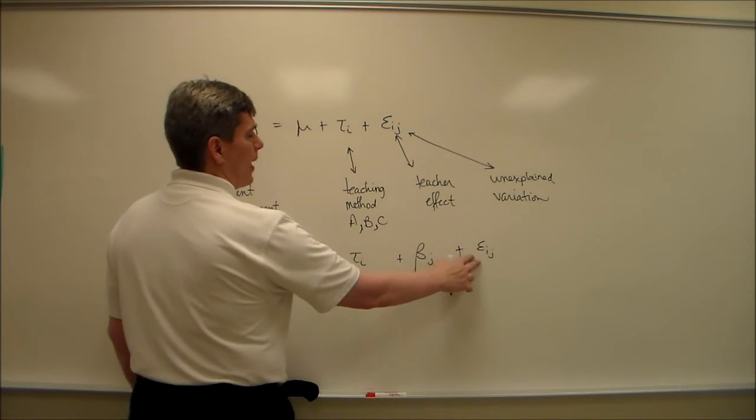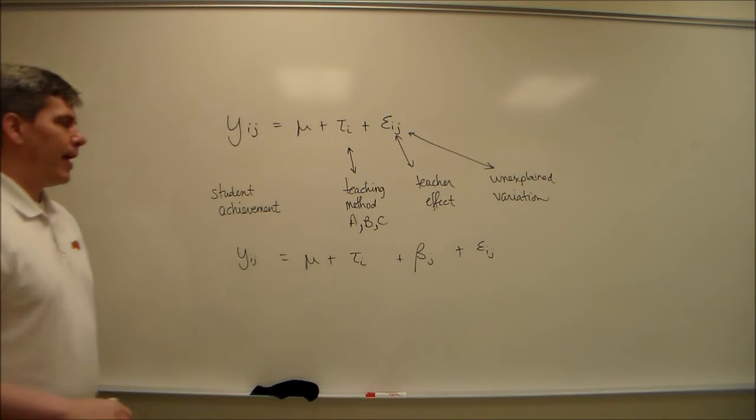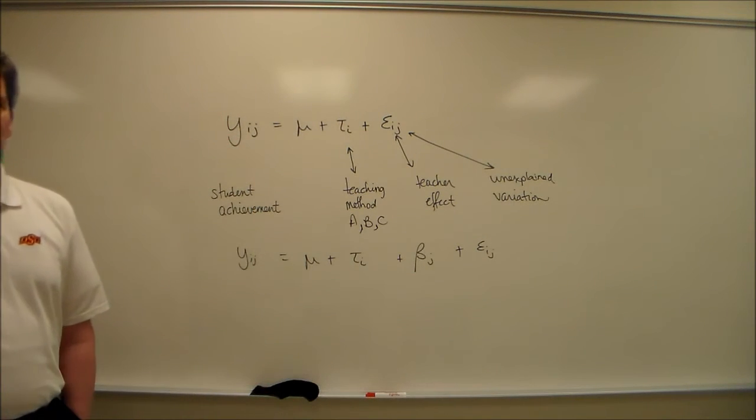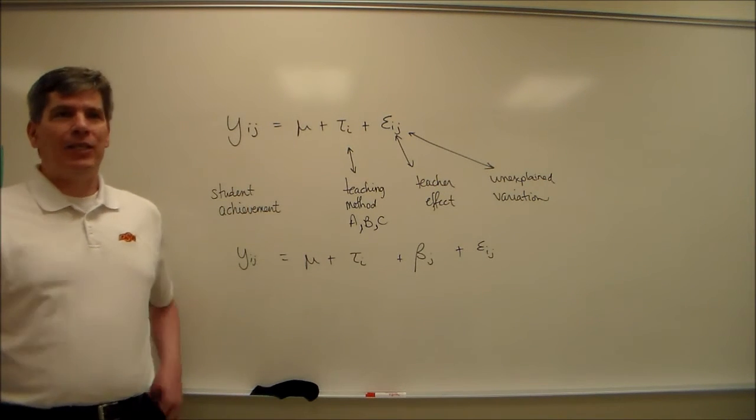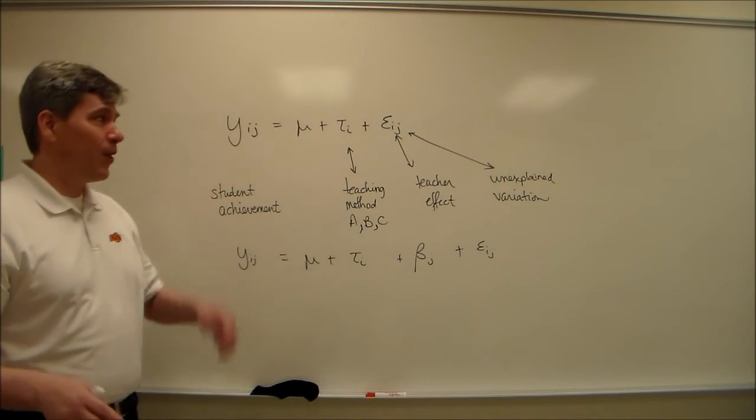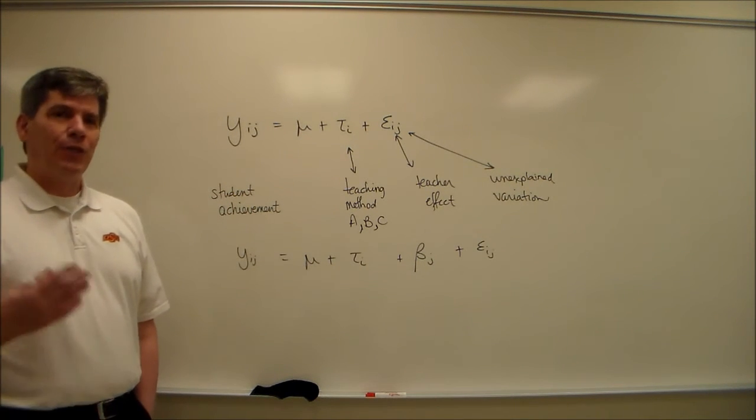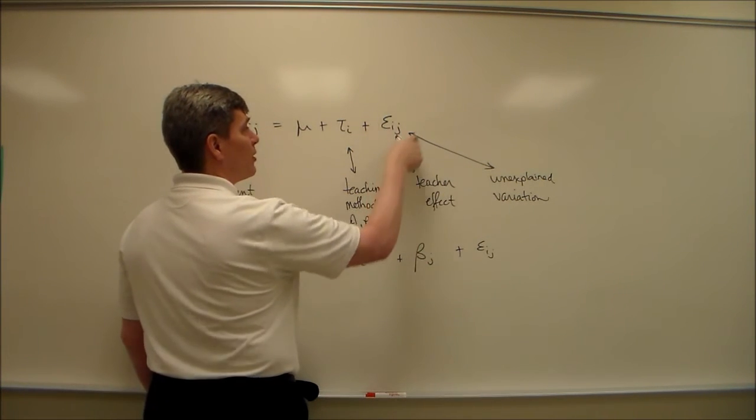Note that this epsilon ij and this epsilon ij are not the same. Note that the book uses Greek letters even though this is a random variable. We don't care to compare teacher Johnson with teacher Etheridge. We're just calling them teachers one, two, three, four, five.